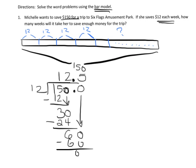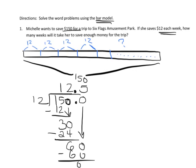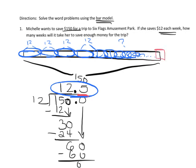So what does 12.5 mean? It means we have 12 groups of $12, and the 0.5 means half a week left over, since each 12 represents one week. If we round down to 12, she wouldn't quite have enough money. She technically needs 12 and a half weeks, so the more appropriate answer is she'll have enough money in 13 weeks.